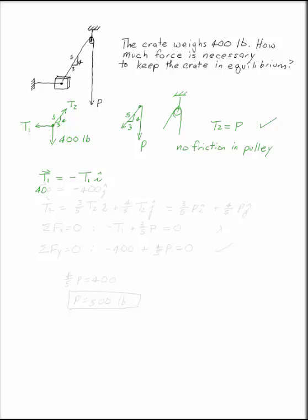400 pounds is in the negative J direction, and we have T2, which is a 3, 4, 5 right triangle. So we have 3/5 T2 I plus 4/5 T2 J,